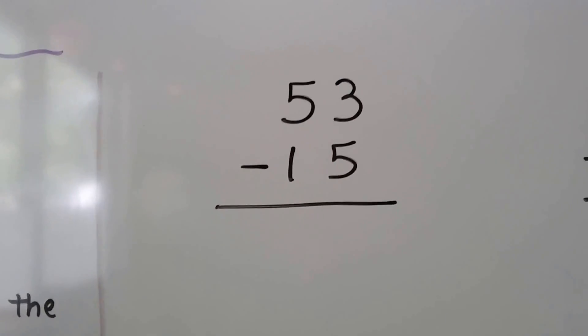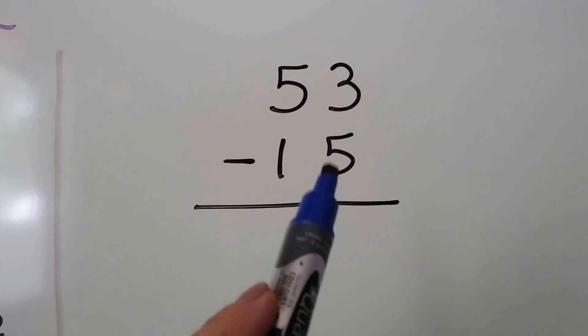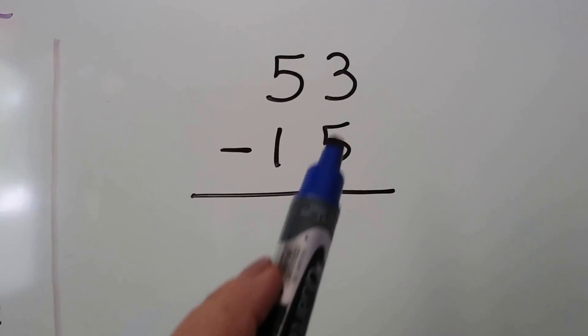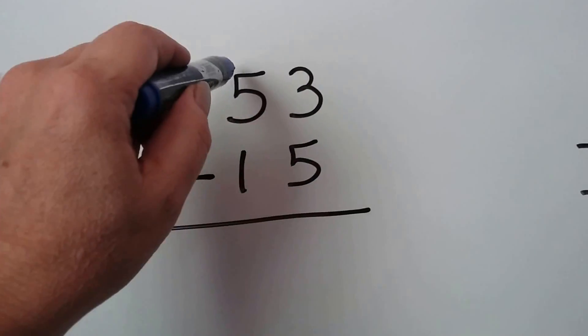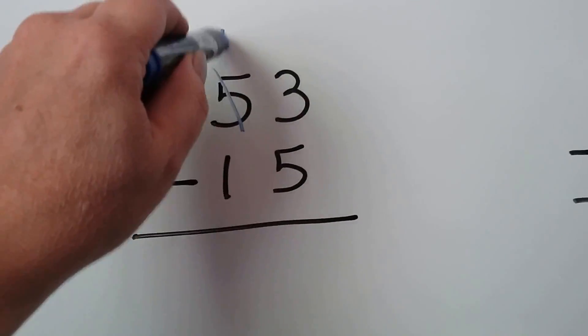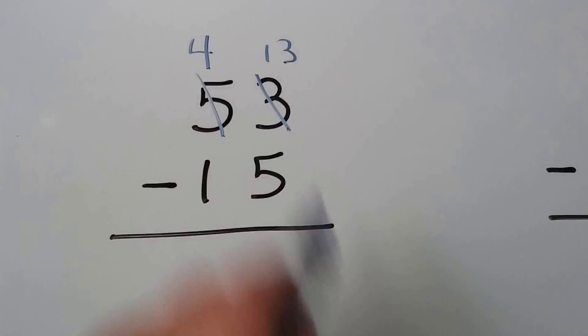We've got 53 minus 15. First thing we do is look at this subtrahend ones place, and this 5 is greater than the 3, so we know we need to regroup. This 5 is going to become a 4. The 3 will then become a 13, because we gave the 10 to the ones place.